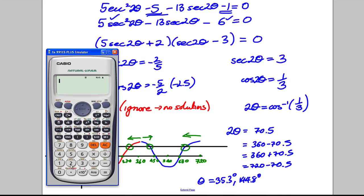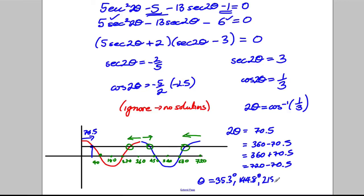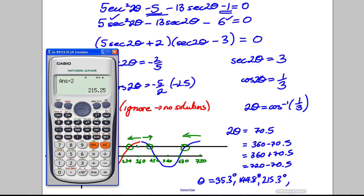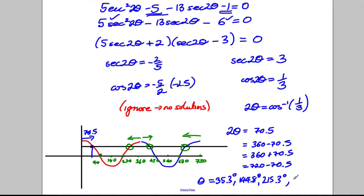Next, I do 360 add 70.5, and then I divide it by 2, and I get 215.3 degrees, so 215.3 degrees, and lastly, I do 720 subtract 70.5, and then I divide it by 2, and I get myself 324.8 degrees, so 324.8 degrees. And they are all my solutions to 1 decimal place.